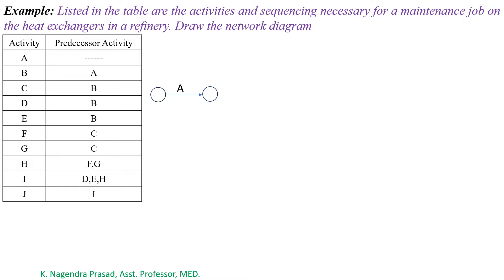Next, observe activity B. For activity B, A is the predecessor activity. So B will start after completion of A. Let's draw activity B.